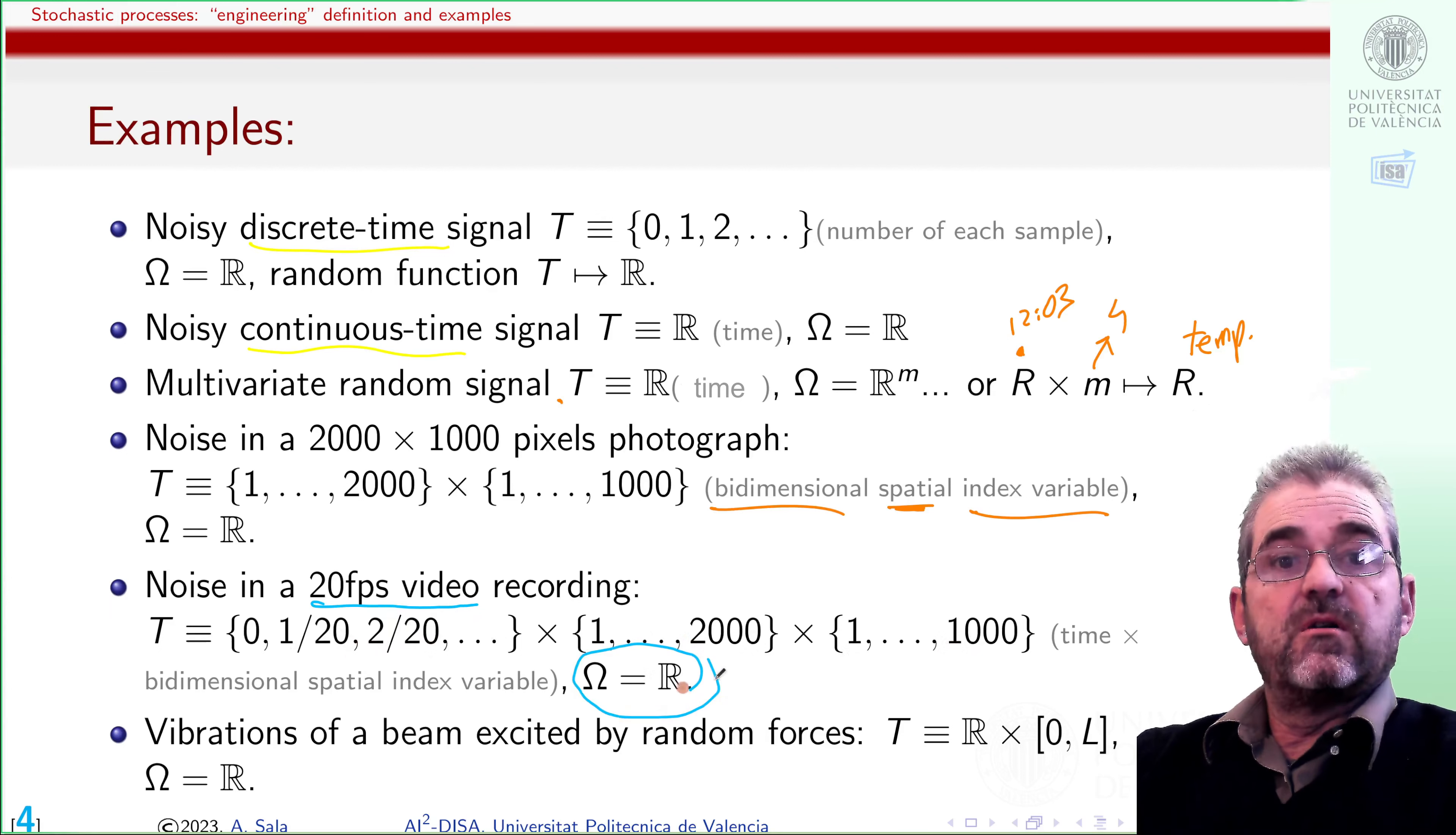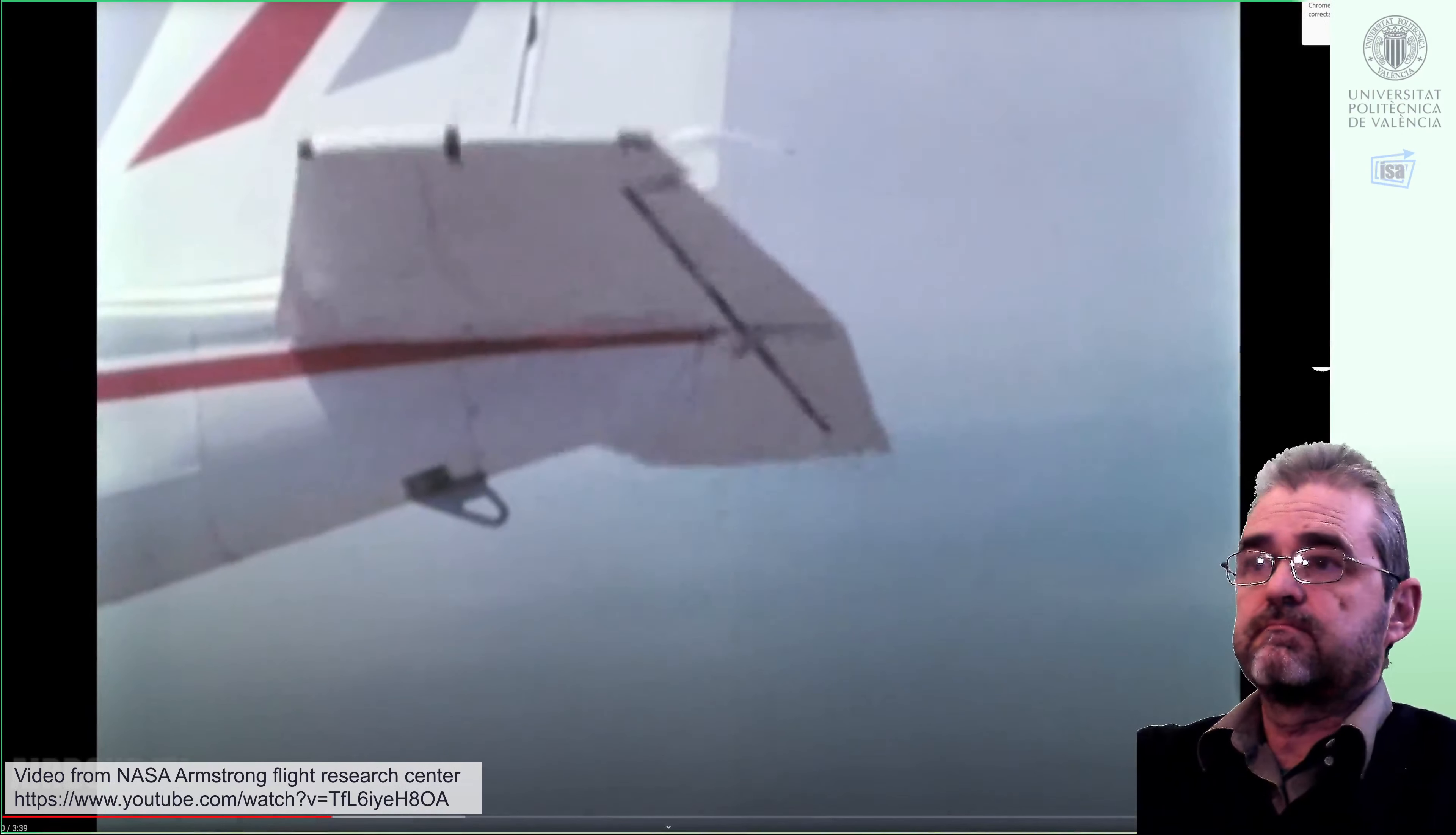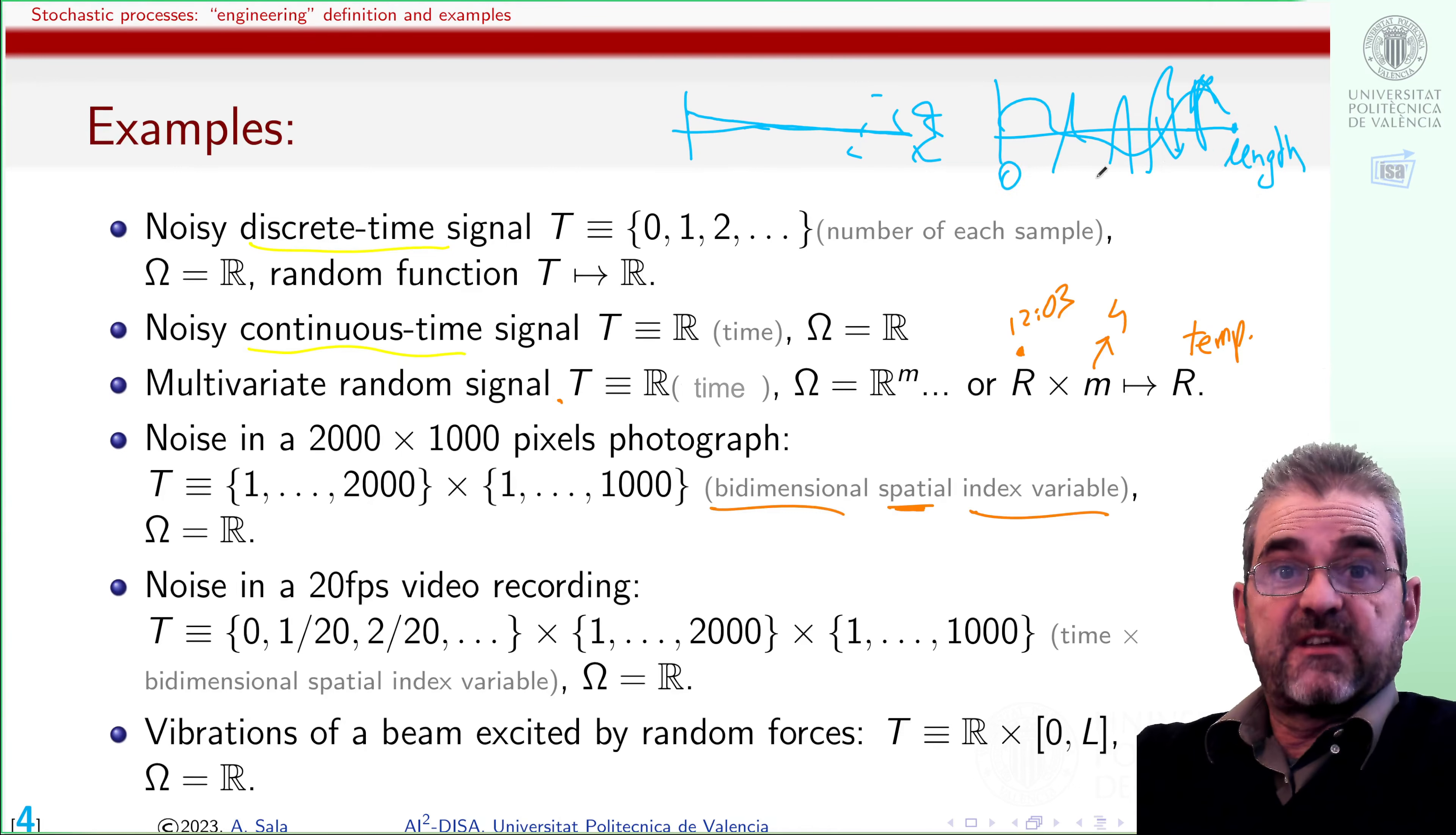And then the color, maybe a real number, or three real numbers, if I take red, green, and blue pixels. And there may be correlation between the noise at adjacent pixels, or an adjacent instant, or both. And last, we may have an airplane wing excited by turbulence, so there are vibrations flutter. And these random vibrations is a random function of both length and time. So these are examples of noisy signals in audio, video, structures, multivariate control, that we need to formally analyze in a statistical way. These are the stochastic processes.